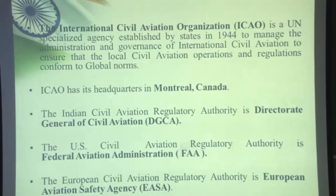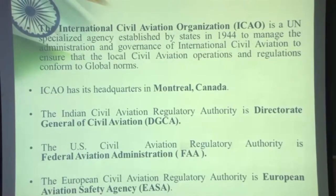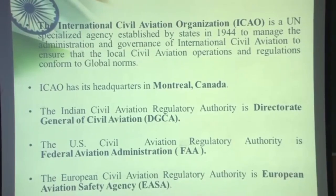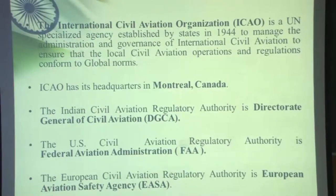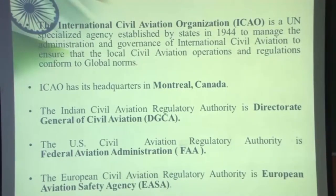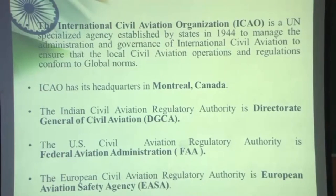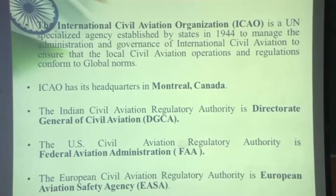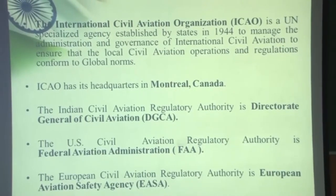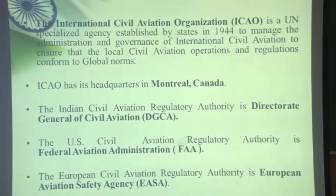This aircraft operation all over the world is governed by an international body, a UN specialized agency called the International Civil Aviation Organization, ICAO. It is a UN specialized agency which was established by states in 1944, so that aviation all over the world can be administered and governed and international rules, regulations and norms are in sync everywhere. ICAO has its headquarters in Montreal, Canada.